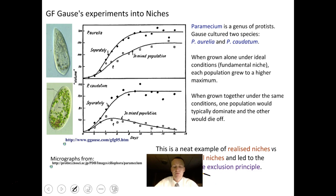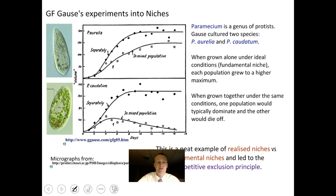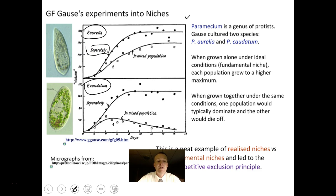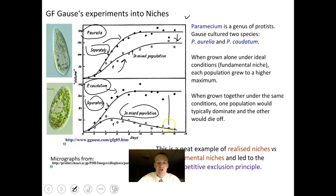Gause did an experiment with two different species of paramecium: Paramecium aurelia and Paramecium caudatum. He grew them separately and together. Aurelia does really well separately and not too badly in a mixed population — its population is reduced somewhat. Caudatum does well separately with a high population density, but in a mixed population it significantly drops because it can't compete as well as aurelia. Its realized niche is very small in comparison to its fundamental niche.